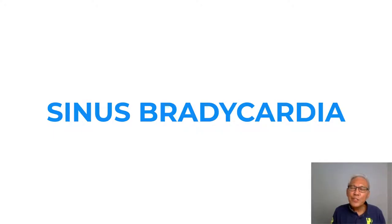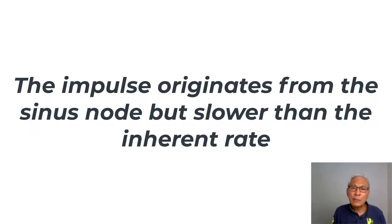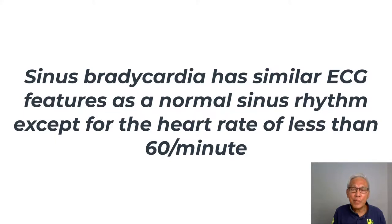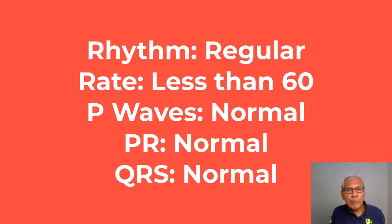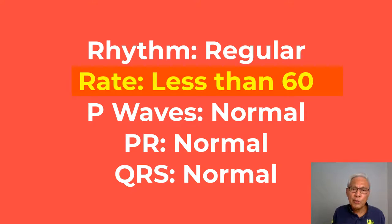Sinus bradycardia is a rhythm where the impulse originates from the sinus node but at a slower rate, less than 60 beats per minute — usually between 40 to 60, although in some instances it might be less. The true mark of bradycardia is a rate less than 60 beats per minute. The characteristics of sinus bradycardia are: the rhythm is regular, the rate is less than 60, the P waves are normal, the PR interval is normal, and the QRS duration is also normal.